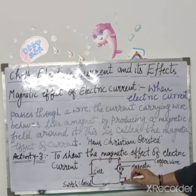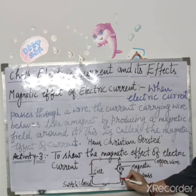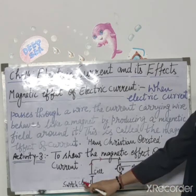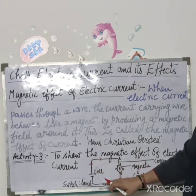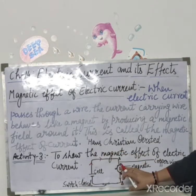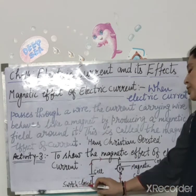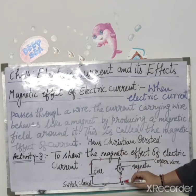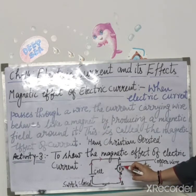To yi cheez aapko samajh mein aa gayi hogi. Jab hum log ne switch on kiya to kya hua? Jab hum log ne switch ko open kiya — yani ki jo circuit hai usko open kiya — to current flow hona band ho gaya, aur magnetic compass ki jo needle hai, woh north-south direction mein hi thi. Jab hum log ne switch ko close kiya, to dekha ki current flow karne laga aur jo compass ki needle hai, uska direction change ho gaya, apni original position se uska direction change ho gaya.